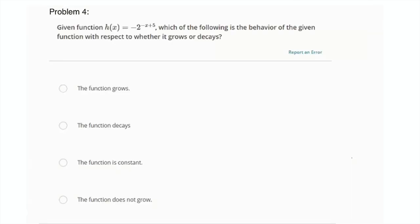For our last problem here, it says given function h(x) = -2^(-x + 5), which of the following is the behavior of the given function with respect to whether it grows or decays. So we want to know, is this exponential growth, exponential decay, or neither? In order to do that, we want to kind of get a sense of what the graph would look like, what its shape would be. So we're going to have to just plug in some points and see what the output is and get a sense. So I'm going to make a little xy table.